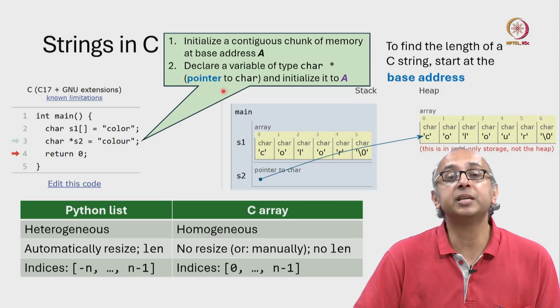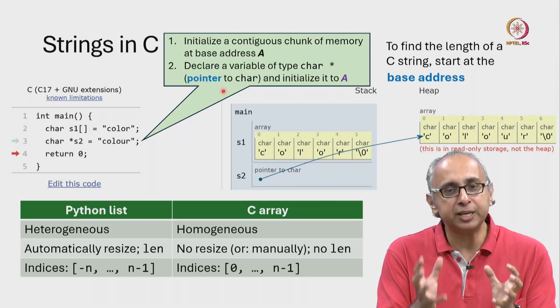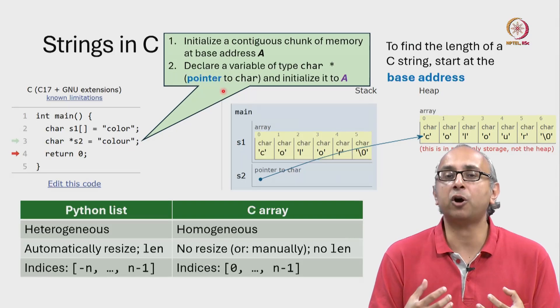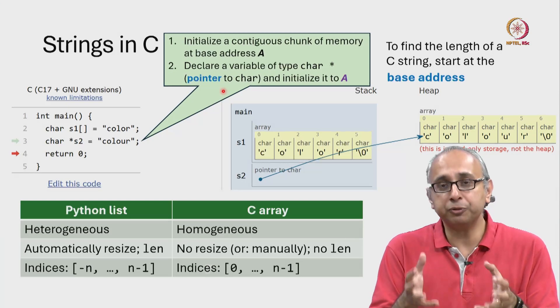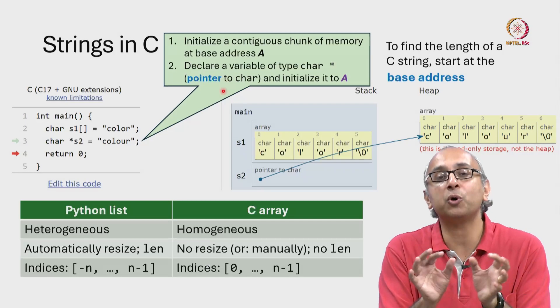This particular pointer is a pointer to char, but all pointers are fundamentally addresses. So when I say I have a variable that is of type pointer, I know that variable is just something that is capable of holding an address.